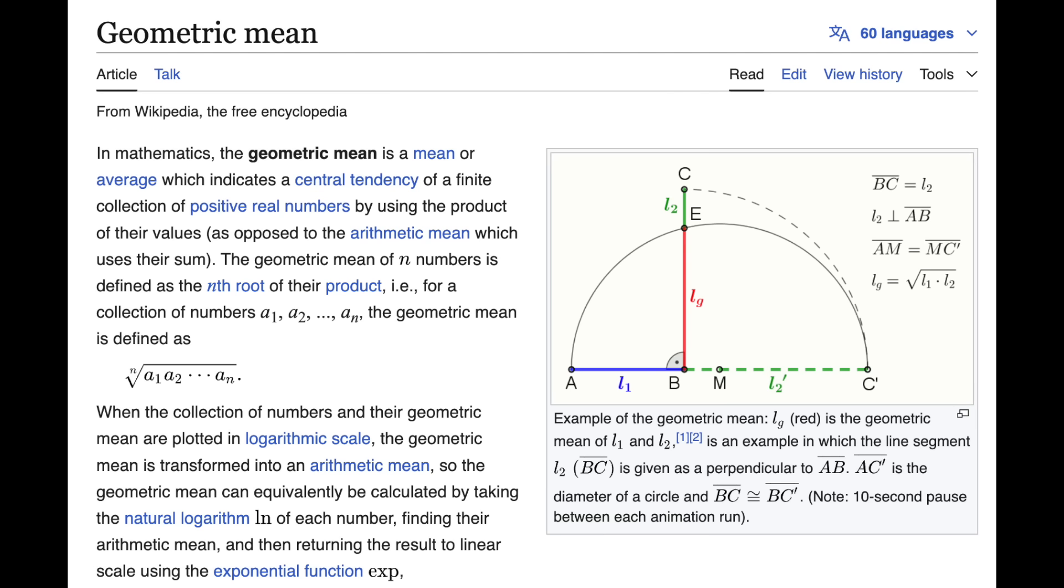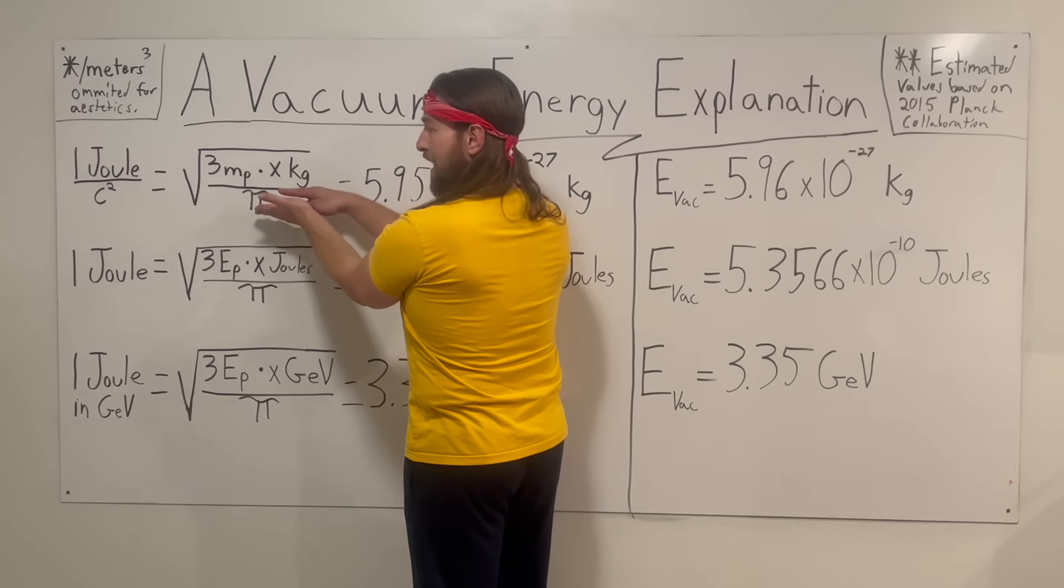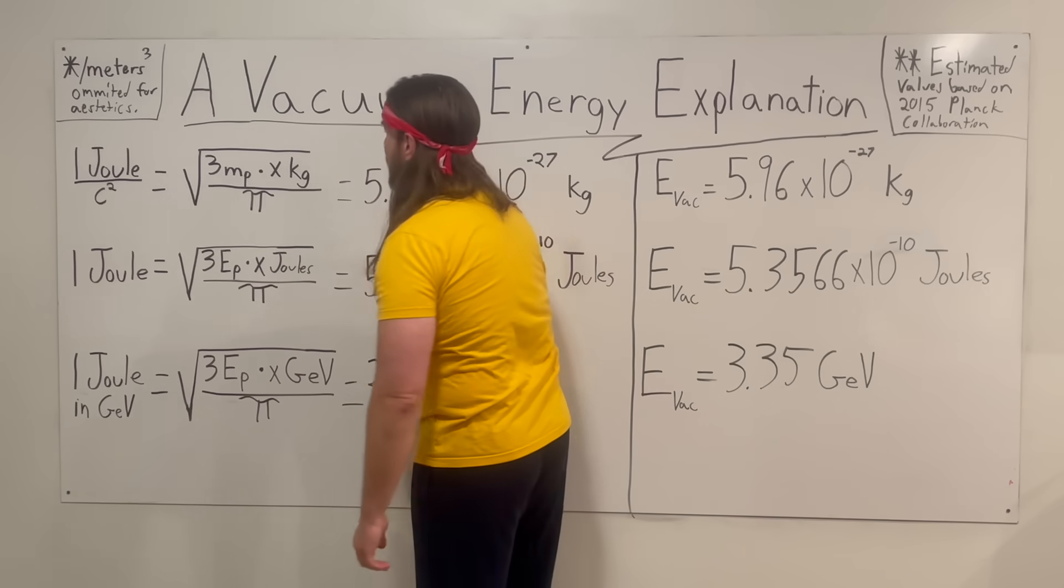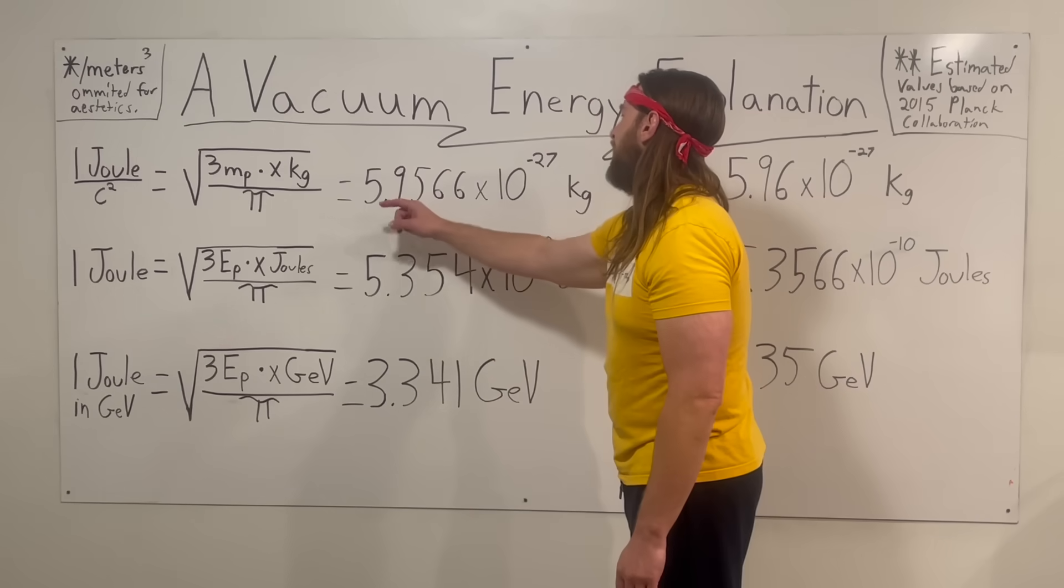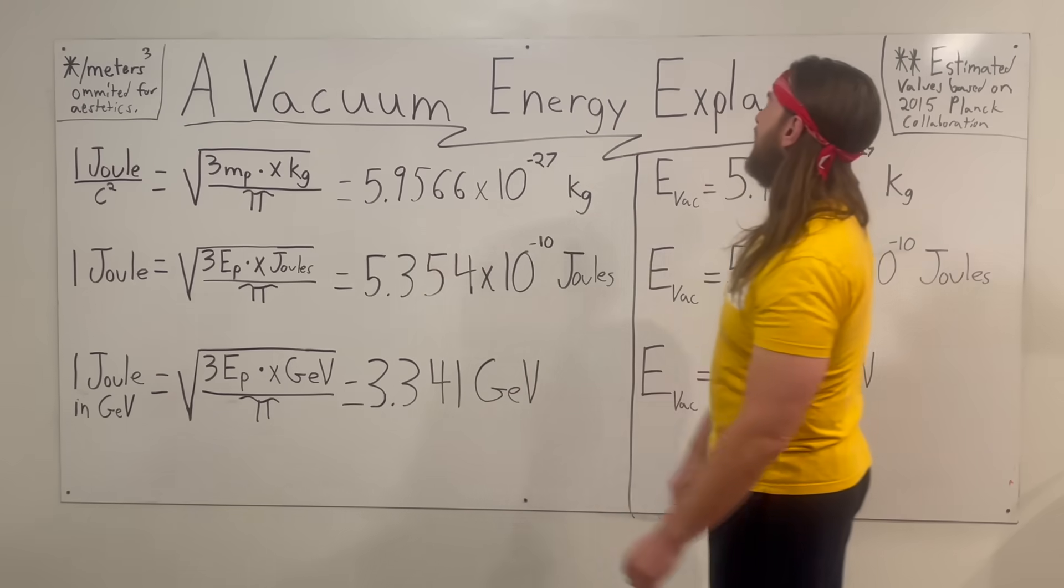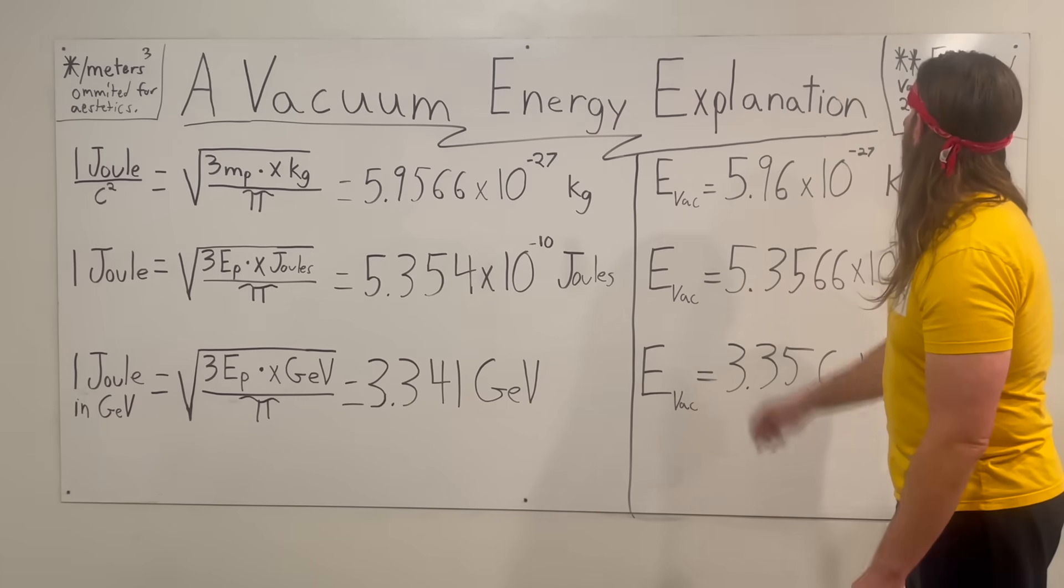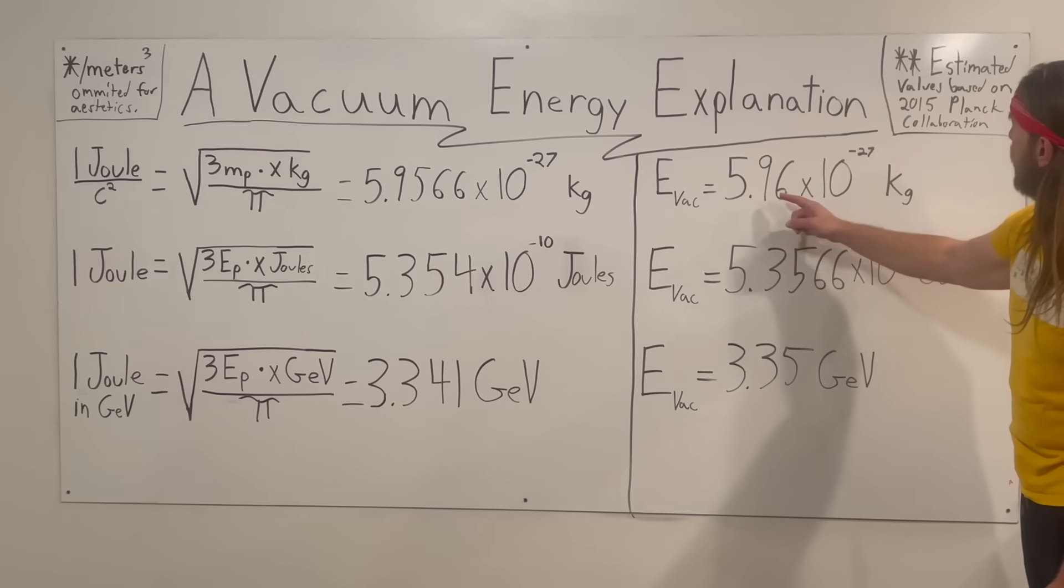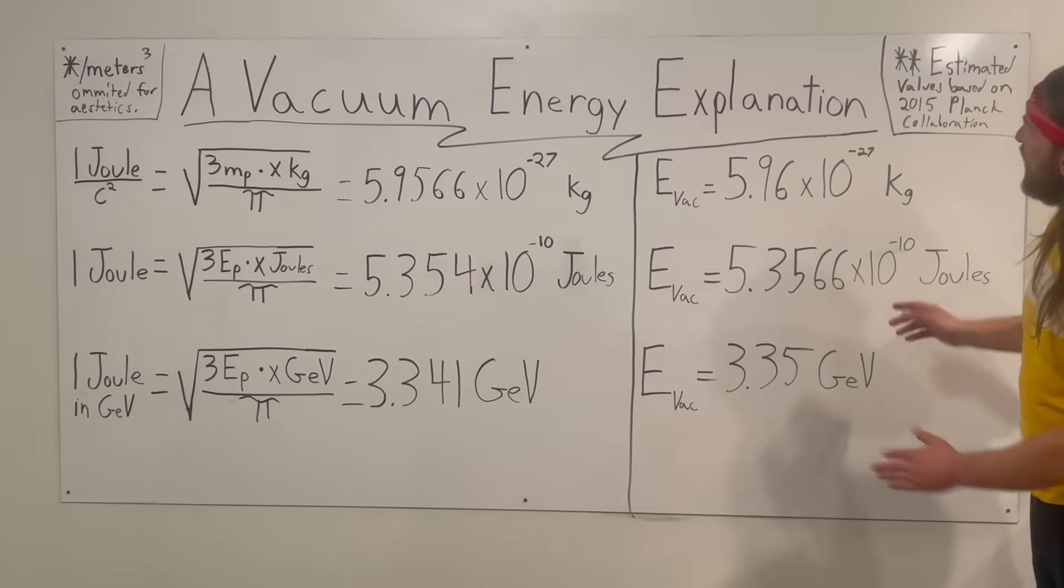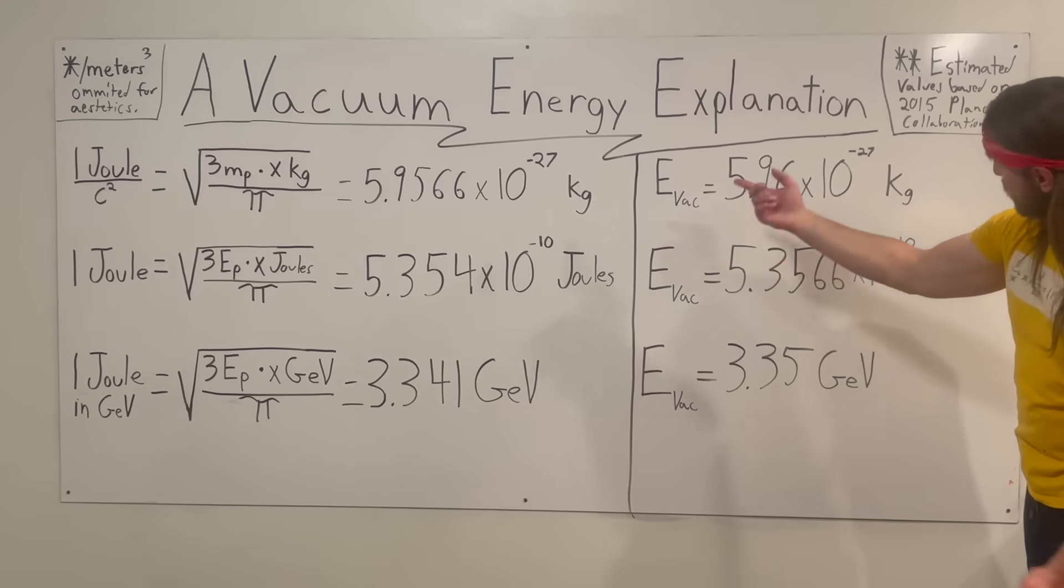I found the simplest form was to take the geometric mean. So you're taking three Planck masses in kilograms output, multiply it by X kilograms (we're solving for X), and the whole thing is divided by pi. In this formation, we get 5.9566 times 10 to the negative 27 kilograms. What do we have listed for the approximate estimate measurements? 5.96 times 10 to the negative 27 kilograms. Again, I've omitted the division by meters cubed for aesthetics. It's pretty close, a little bit below that.